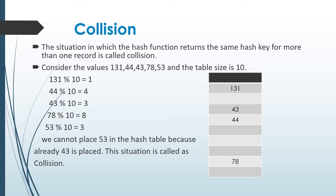By following hash key equal to record mod table size, we can obtain 131 mod 10 equal to 1, and 131 is placed in the hash table at key value 1. Likewise, 44 is placed at key 4, 43 is placed at key value 3, and 78 is placed at key value 8. But 53 cannot be placed because already 43 is placed at key 3 — so this is known as collision.